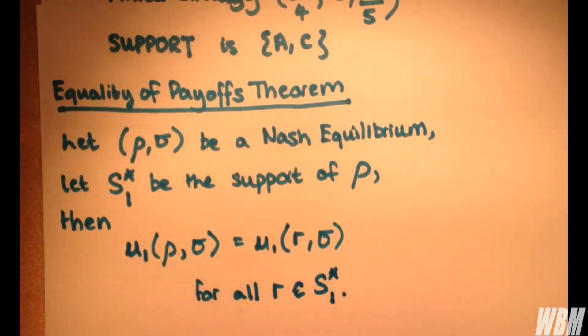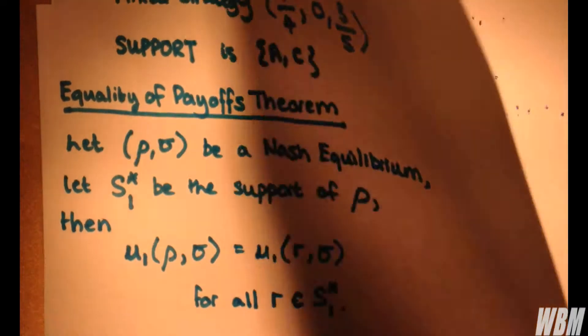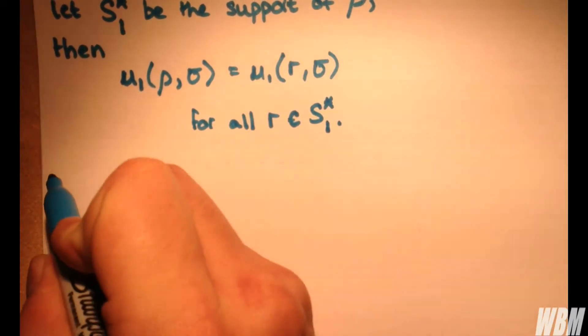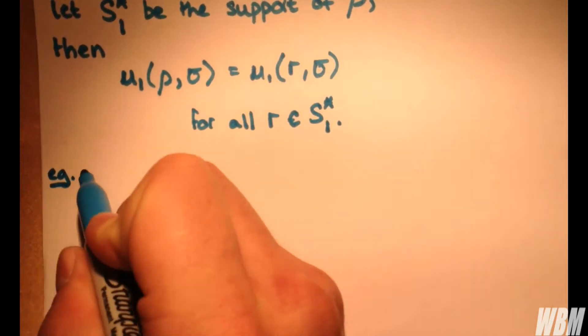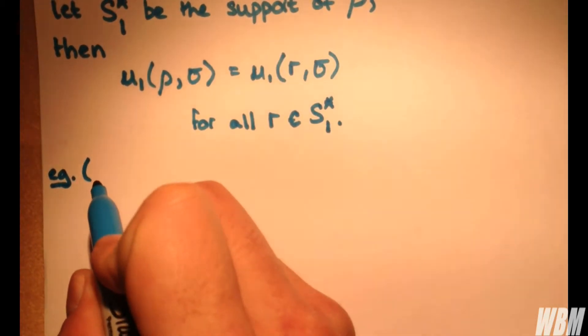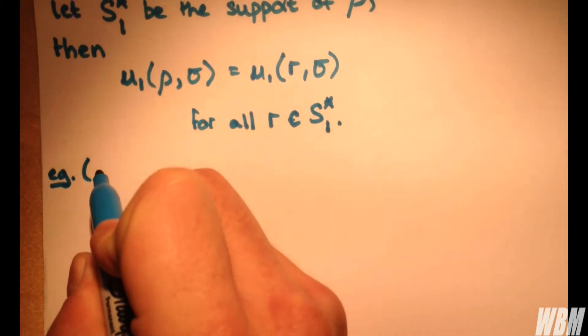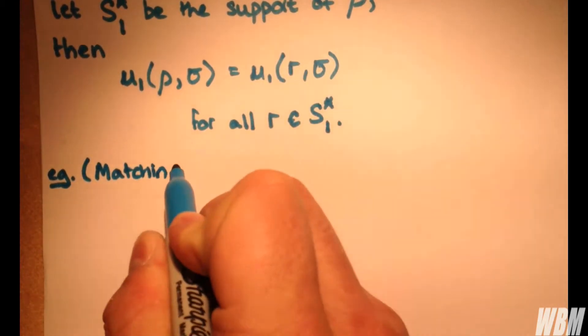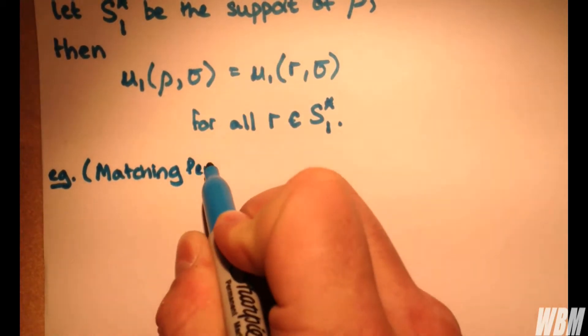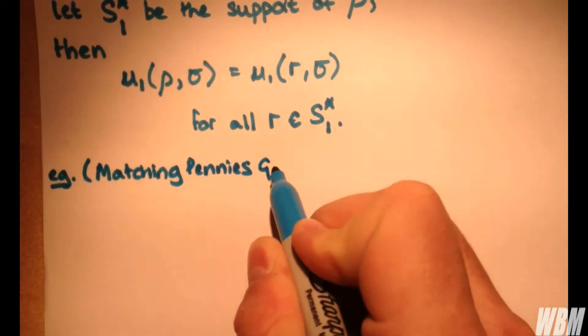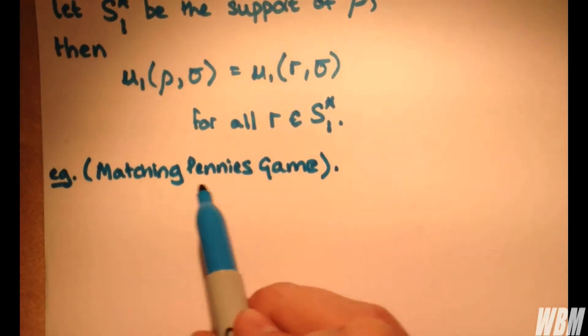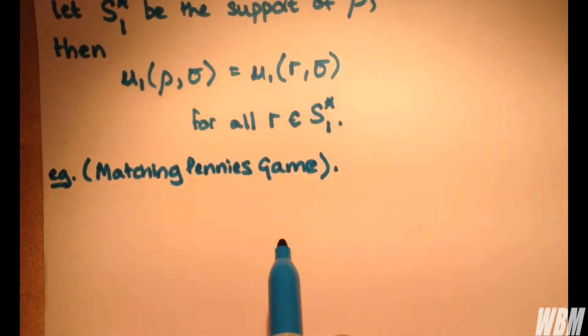So what does this actually mean? Let's look at an example. The example we'll look at will be a quick reiteration of the matching pennies game that we looked at in the previous video. And what we're going to do is basically compare the payoffs for utilities and show they've come to the correct outcome.